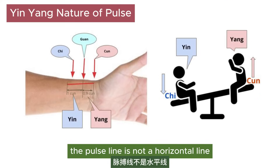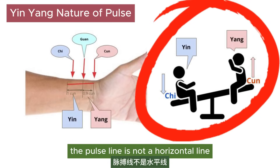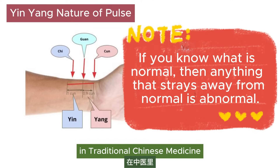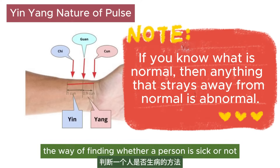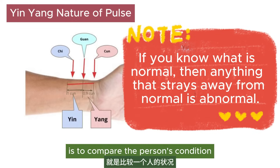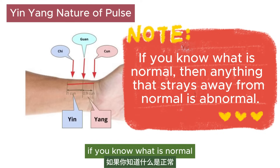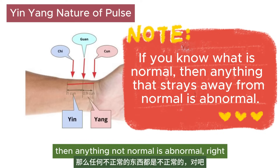The pulse line is not a horizontal line. In traditional Chinese medicine, the way of finding whether a person is sick or not is to compare the person's condition with a healthy person to find out the difference. In other words, if you know what is normal, then anything not normal is abnormal.